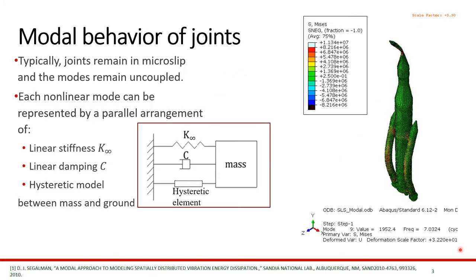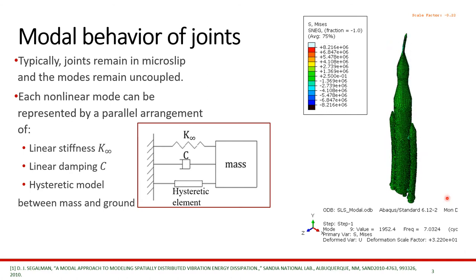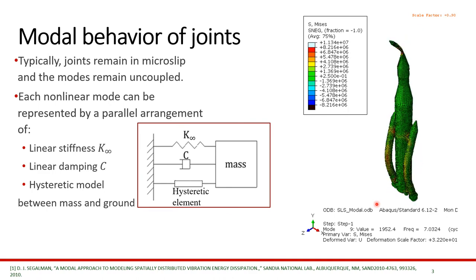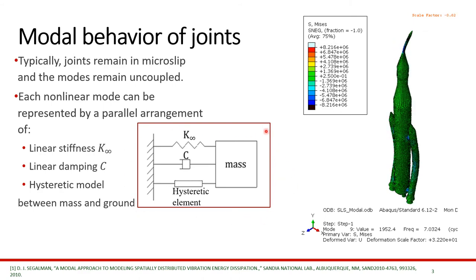Joints are typically designed to remain in micro-slip. In cases where the modes remain uncoupled, instead of modeling each joint in a complex structure, we can model each non-linear mode using a modal modeling approach. That is, the non-linear mode is modeled as a single degree of freedom system consisting of a linear spring, linear damping, and a hysteretic element.